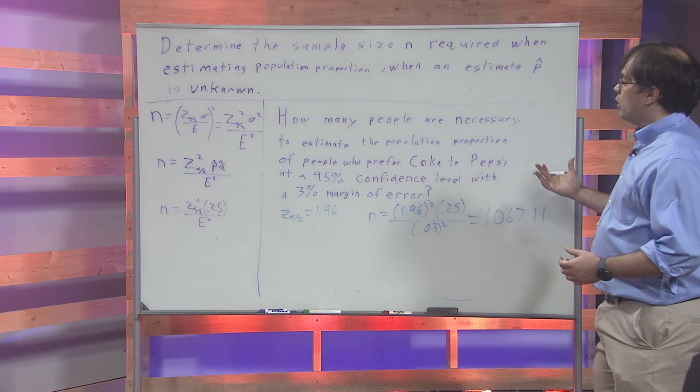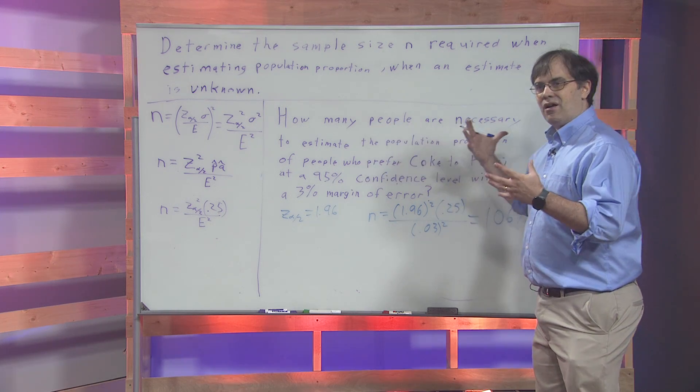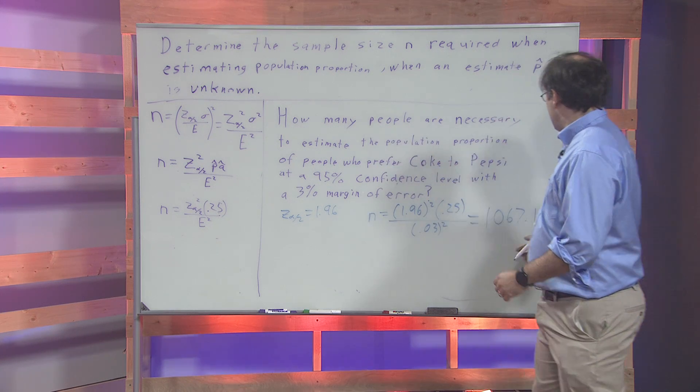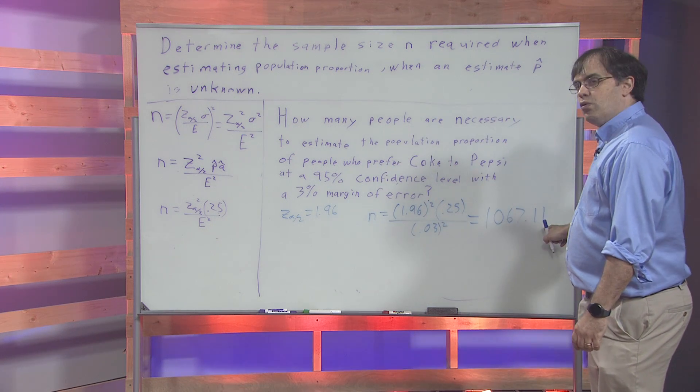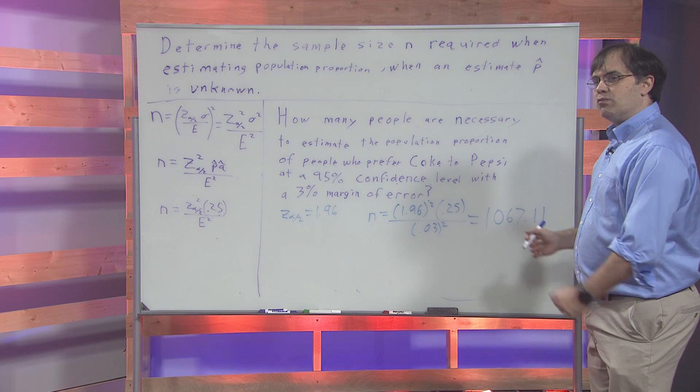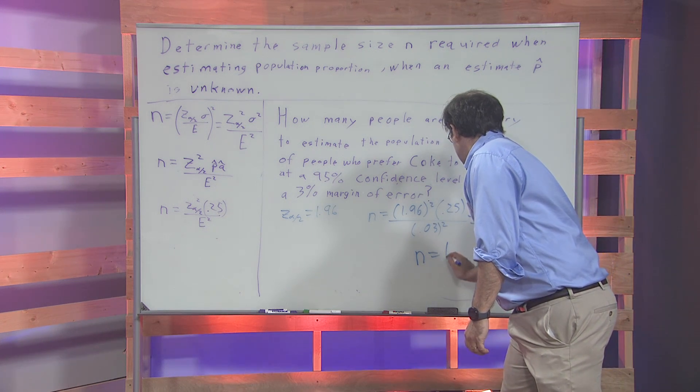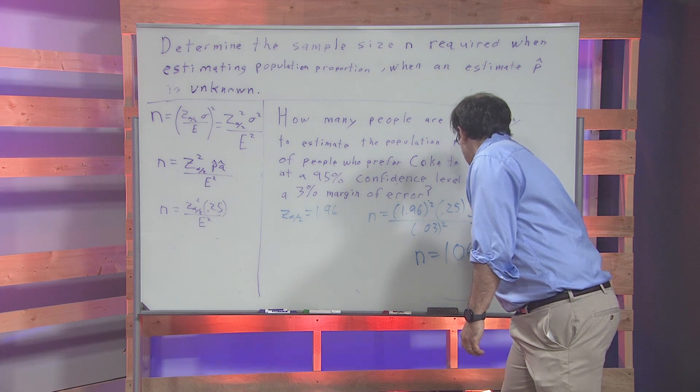And again, we're working with things that you can't break up into pieces when you're surveying people in this case. So the rule was we always round up. So our final answer is that n equals 1068.